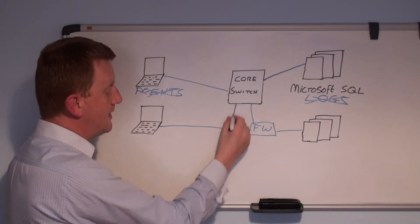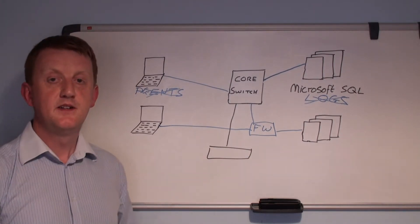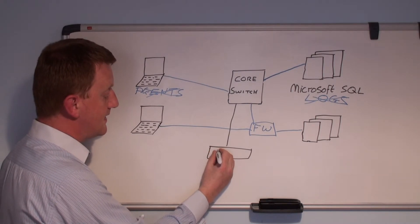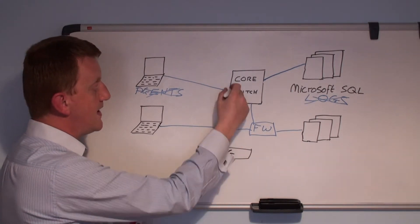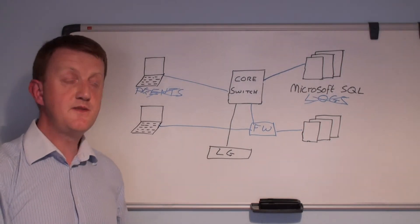Our approach is to install a system called the LandGuardian, connected to your core switch, or switches, and by enabling the span or port mirroring capabilities of your switches.